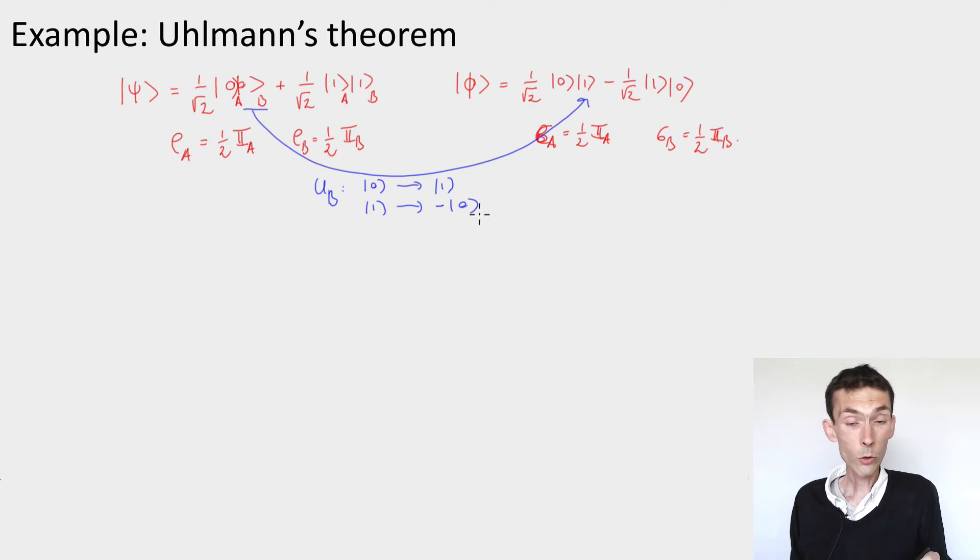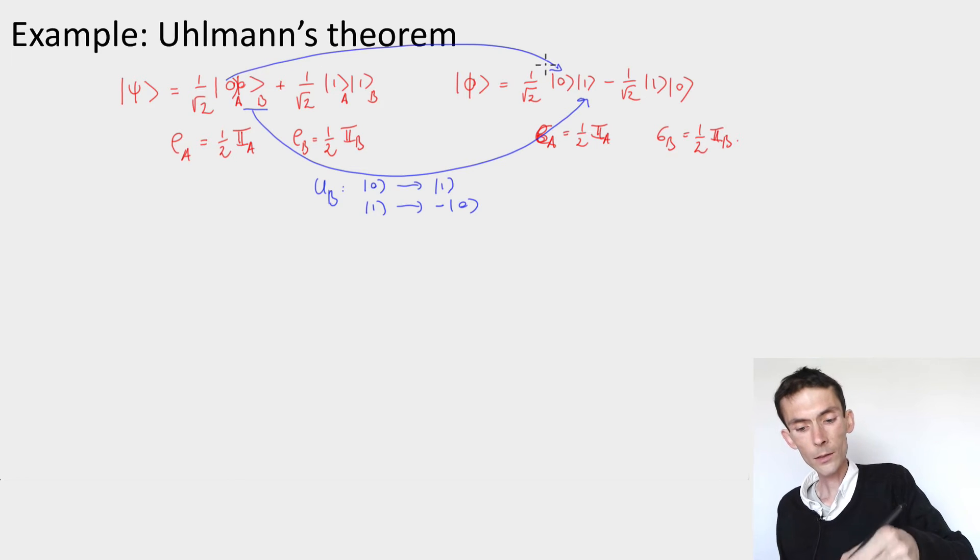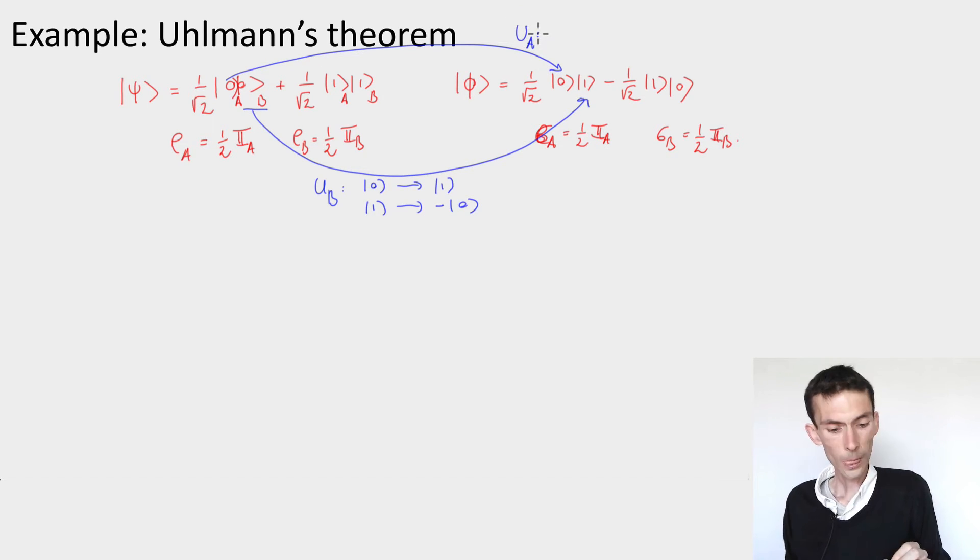Now what's interesting is that we can do the same by acting on A alone. We could have a unitary UA that again maps psi to phi. And what UA would do is that now we have to identify the other two states. So I need to map when B is 0 in phi, I need to map 0 to minus 1 on A and 1 to 0.